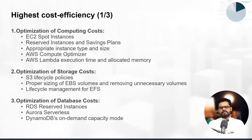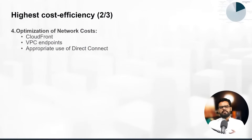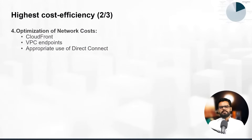Using serverless or on-demand capacity mode for DynamoDB are also options. If the demand on the database changes, you can optimize the cost by using serverless services. For networking, CloudFront often comes up in the exam. CloudFront can deliver cached content from global edge locations, allowing you to deliver content to end users without replicating resources across multiple regions, which can help reduce cost. When transferring data between VPCs, you can avoid additional internet charges by using a VPC endpoint.